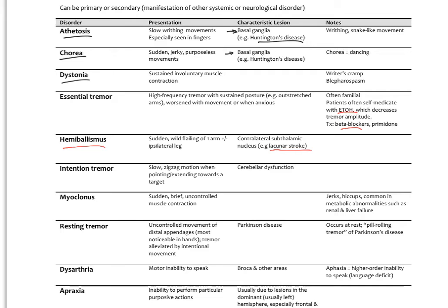Intention tremor is a slow zigzag motion when pointing or extending toward a target, and is almost always a hallmark of cerebellar dysfunction.